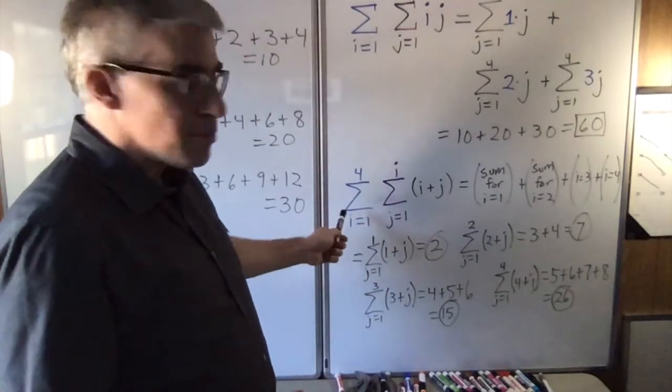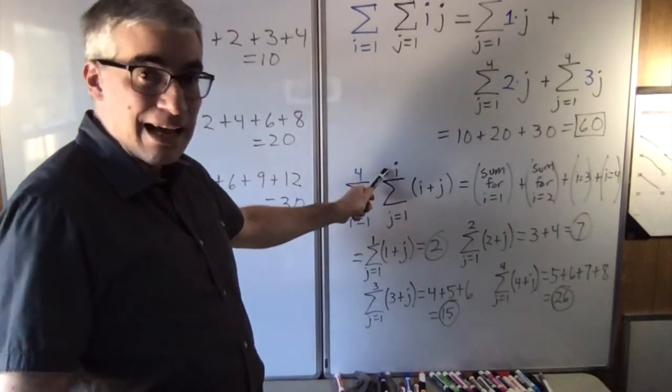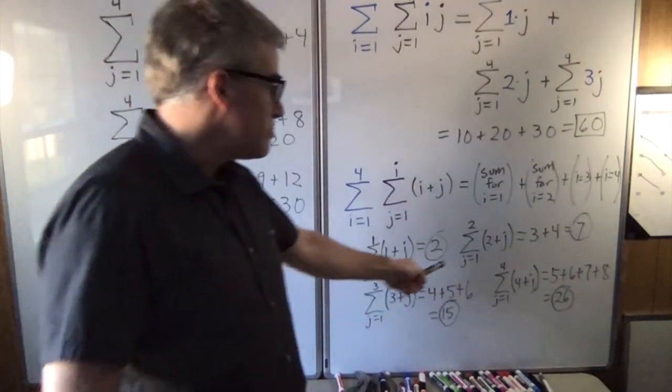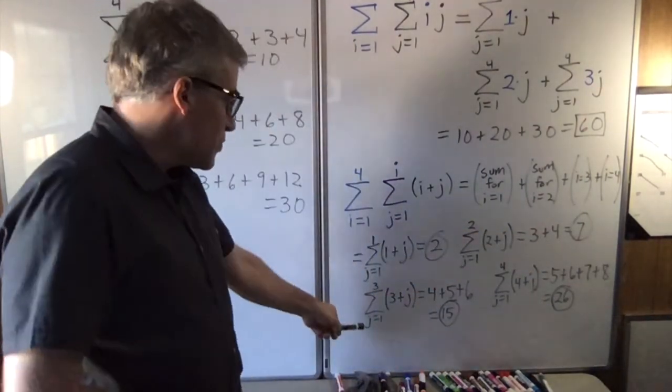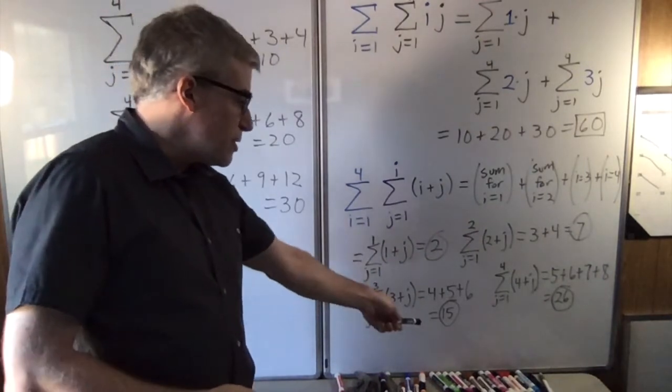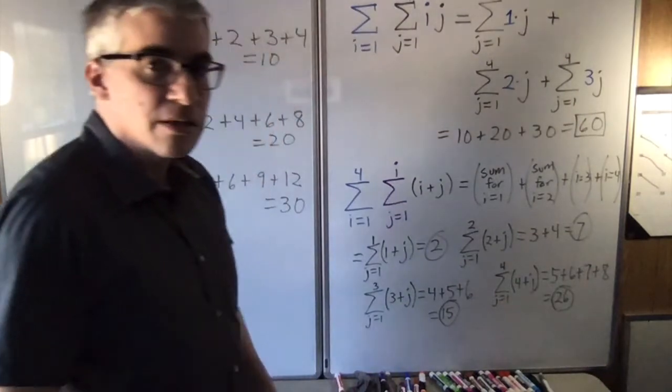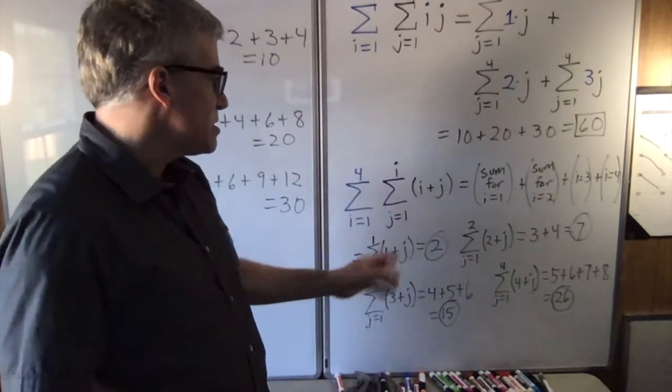A different double sum can actually have i go 1 to 4, and j go from 1 to i. So for the first sum, it goes 1 to 1, so there's only one term. For the second sum, j goes 1 to 2, so you have 3 plus 4 is 7. For the third term, j is 1 to 3, and you get 15. For the fourth term, j is 1 to 4, you get 26. And you can total up 2 and 7 and 15 and 26 to get 50.